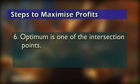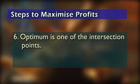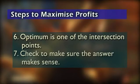Number six: we'll discover that the optimum is one of the intersection points in the feasible area. We need to evaluate these to solve for the maximum or minimum. In this case, we'll be looking for a maximum — that is, maximum profit.